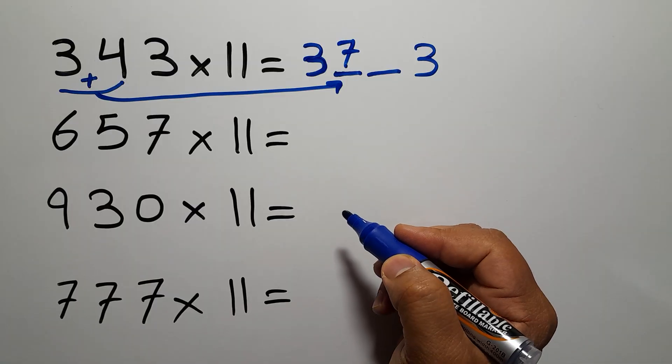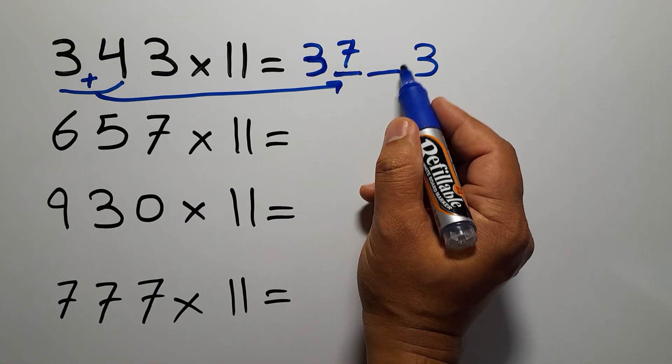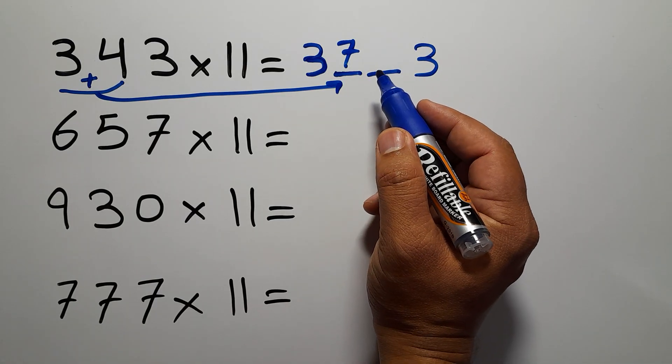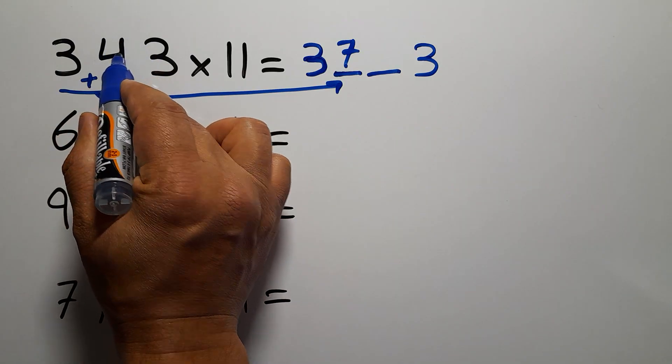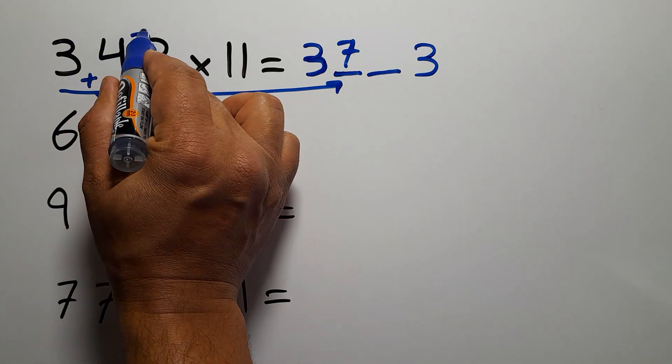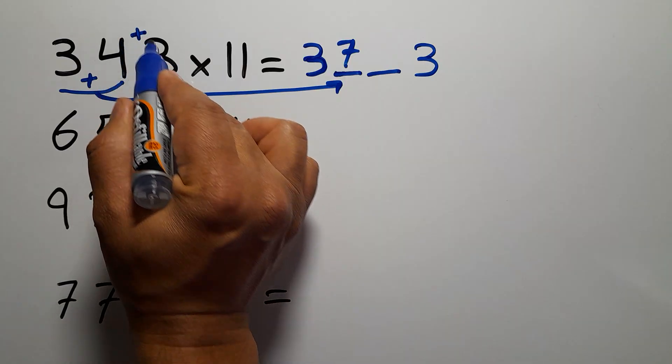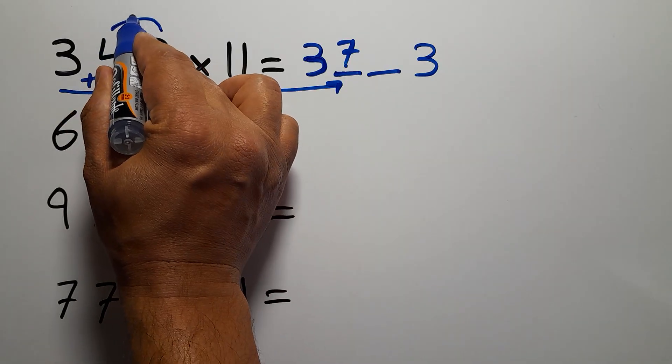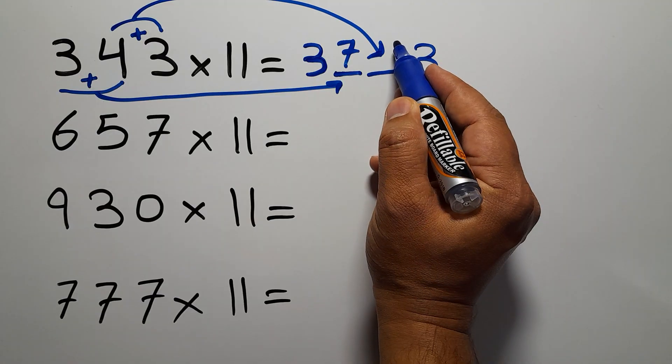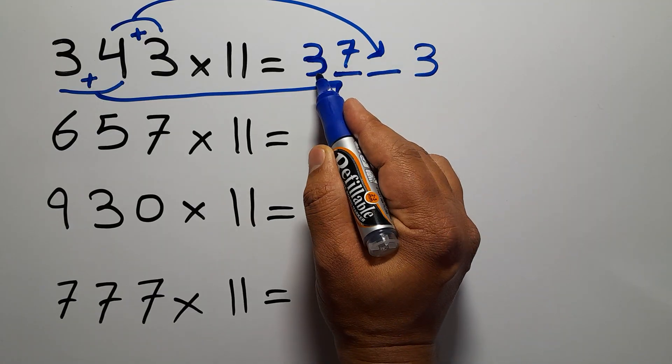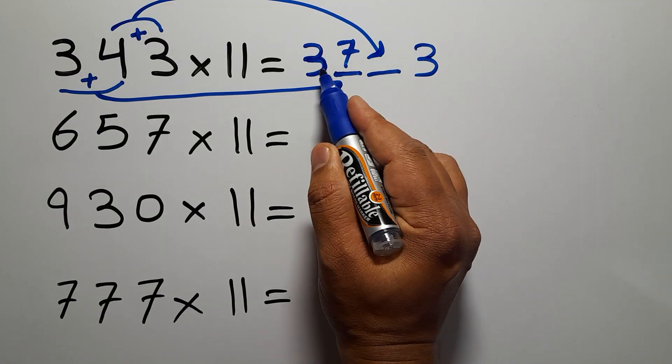And to fill the second blank, we add the last two digits, 4 and 3, which gives us 7. So we place 7 as the third digit of our answer.